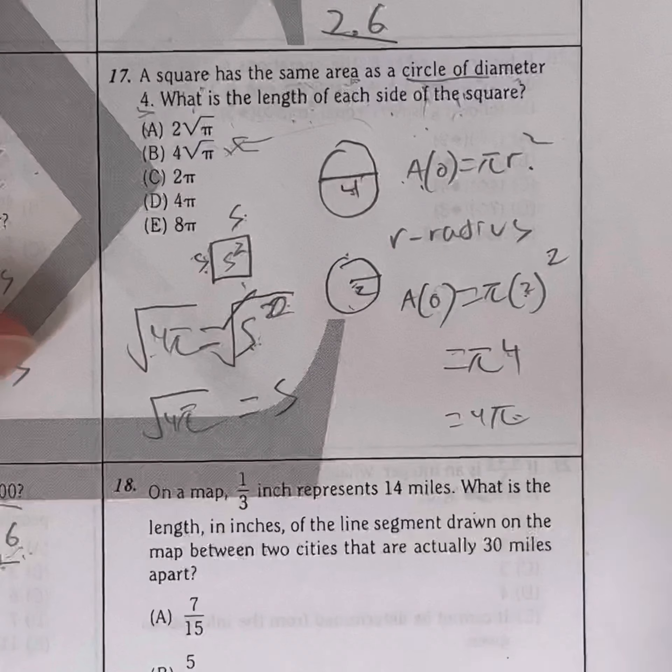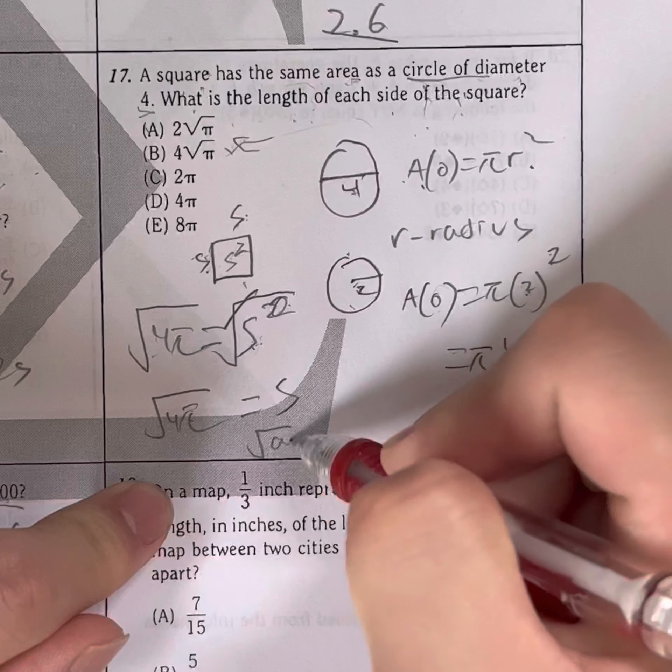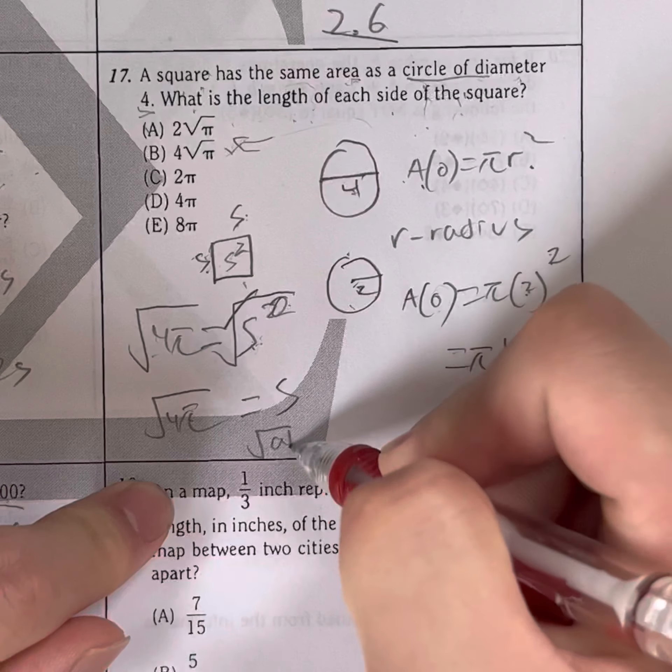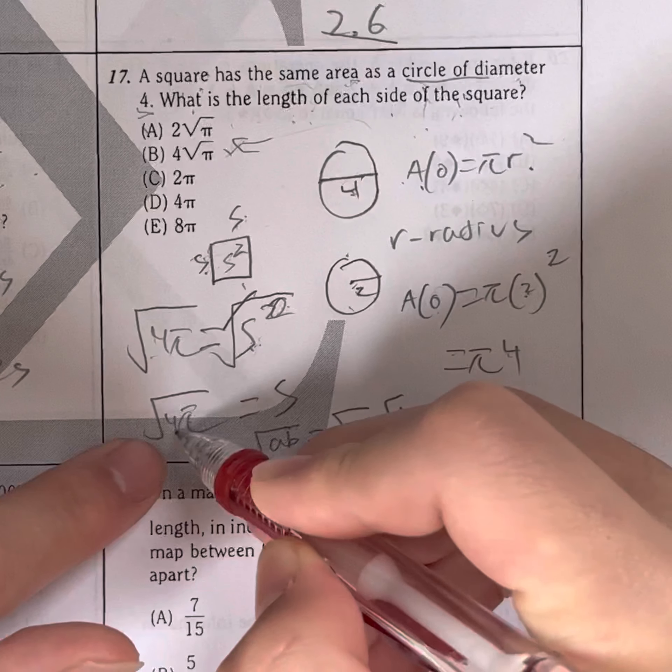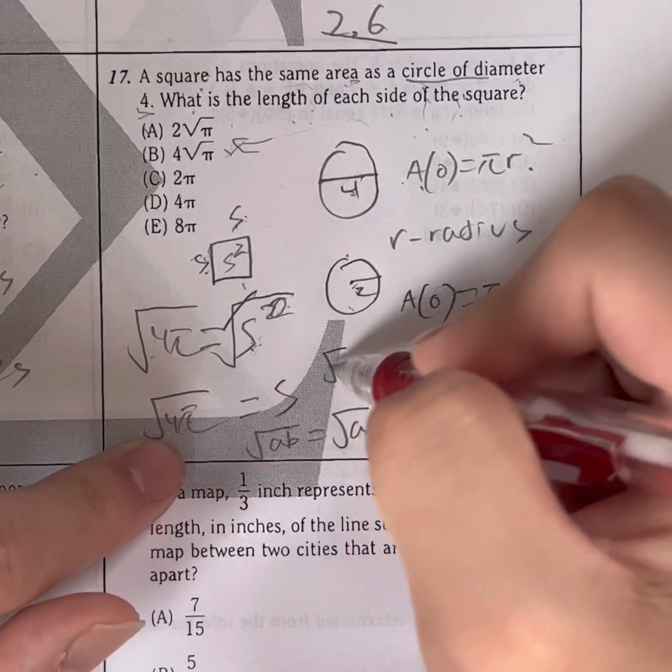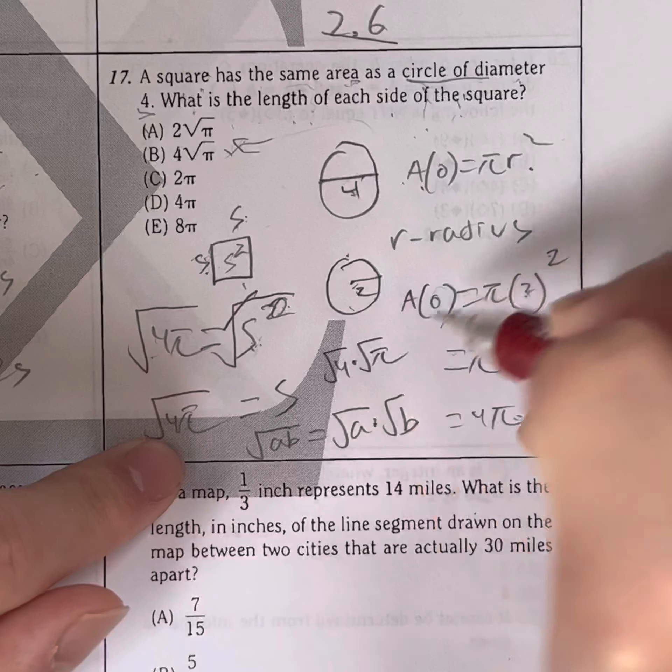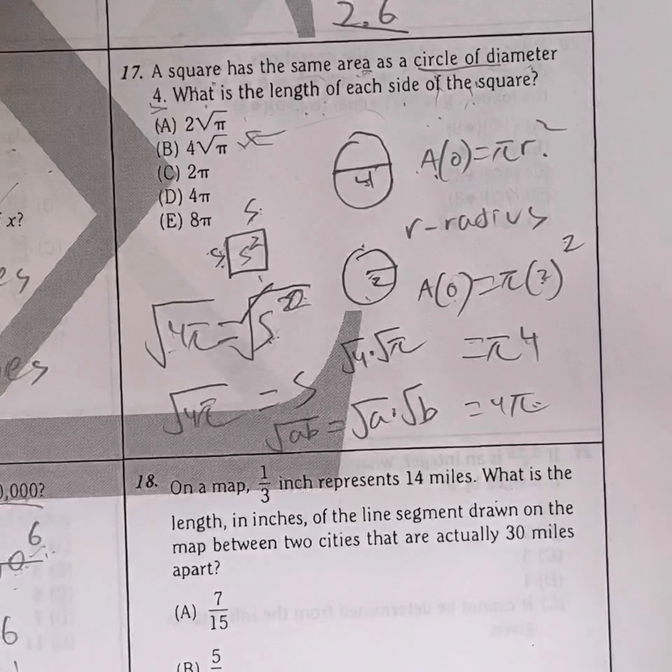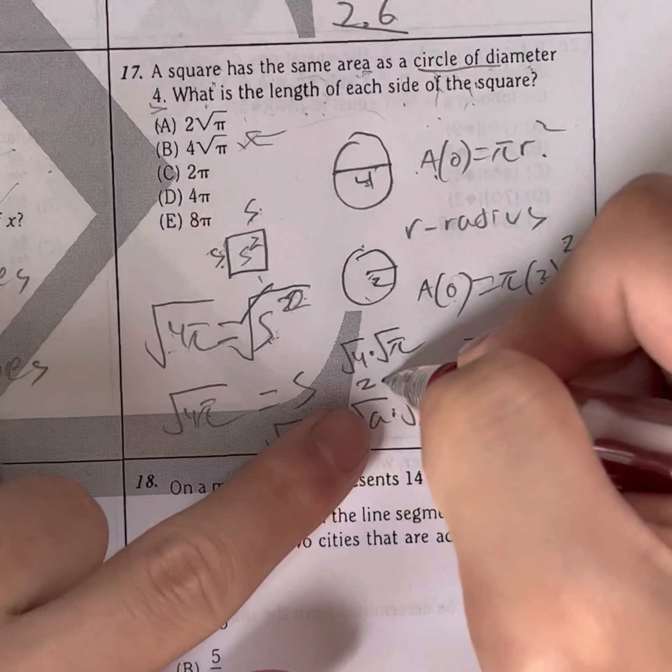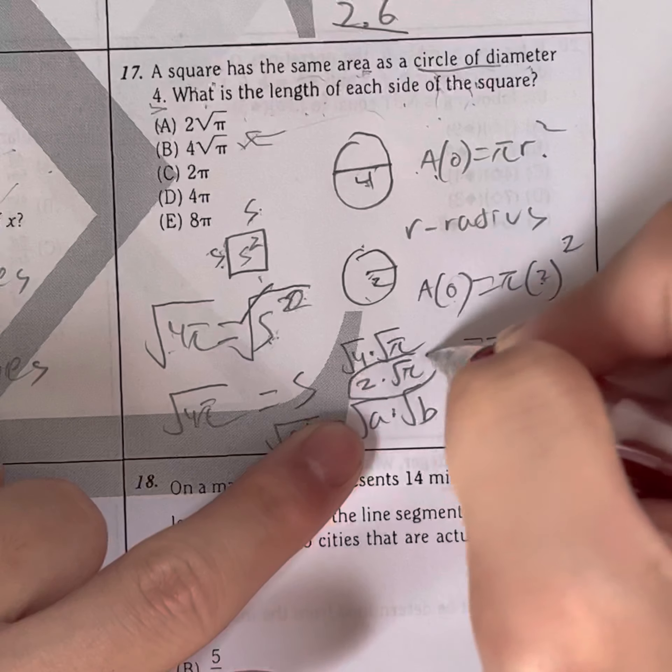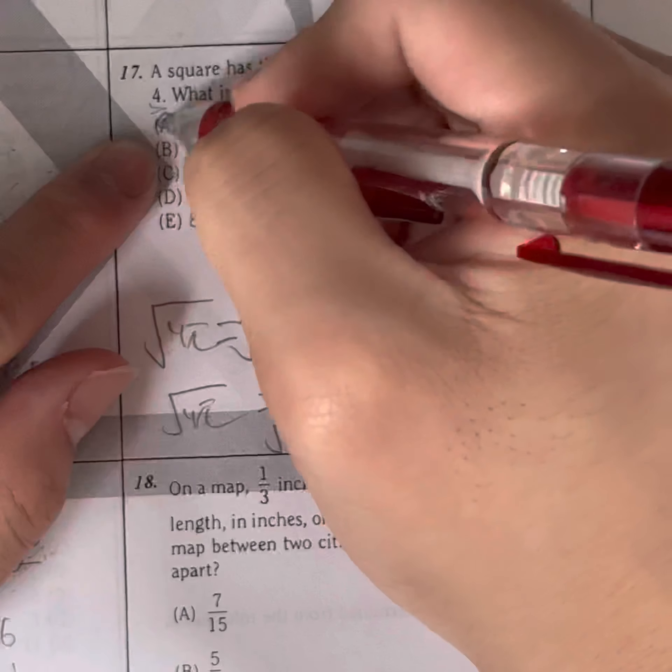So here's the rule that you should remember. So the square root of A times B is equal to the square root of A times the square root of B. So in this case, the square root of 4 pi is the same as the square root of 4 times the square root of pi. Well, what's the square root of 4? You should know that it's 2 right away, times the square root of pi, meaning your answer has to be A.